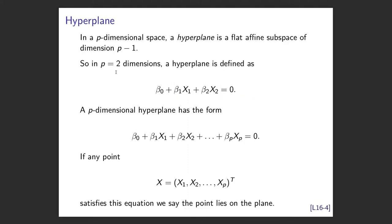We're going to start with a hyperplane. Imagine I'm in p-dimensional space — that's the number of features. A hyperplane is a flat affine subspace of dimension one less than the dimension we're in. Affine means it doesn't go through the origin necessarily. Normally a subspace will always go through the origin, but affine means it doesn't have to. It's just a linear combination of dimension p minus 1.